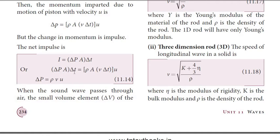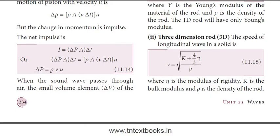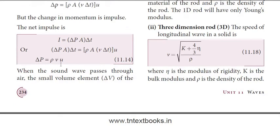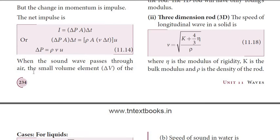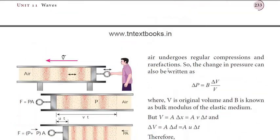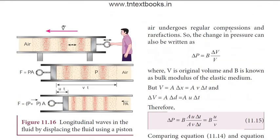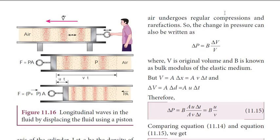Therefore, delta-P times A times delta-t equals rho times A times v times delta-t times u. Simplifying, delta-P equals rho times v times u. When a sound wave passes through air, the small volume element delta-V of air undergoes regular compression and rarefaction. The change in pressure can also be written as: delta-P equals B times delta-V divided by V, where B is the bulk modulus.